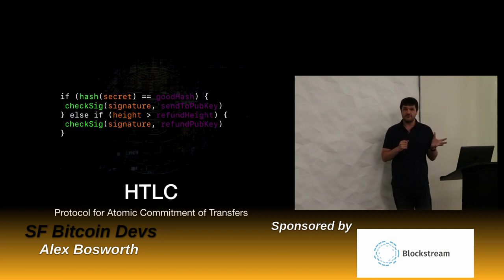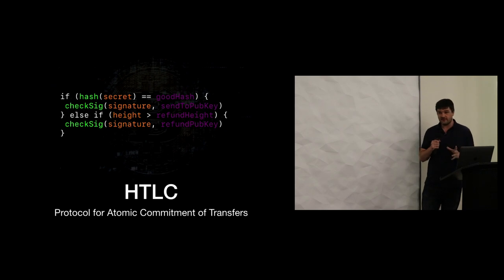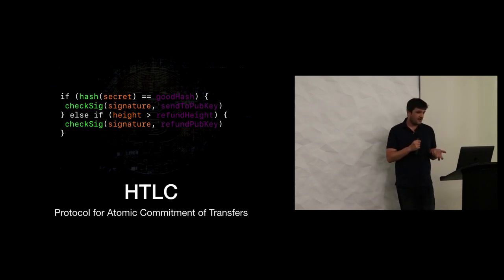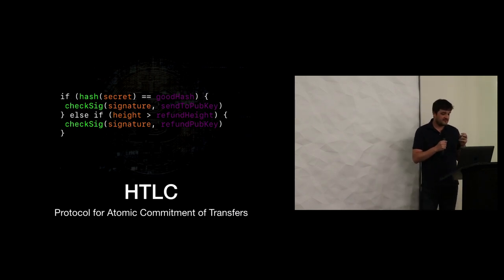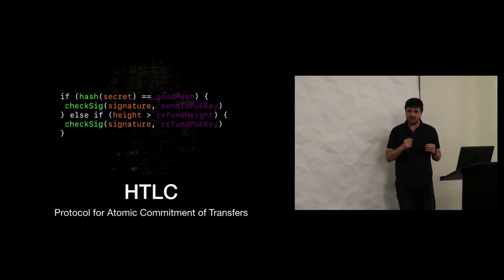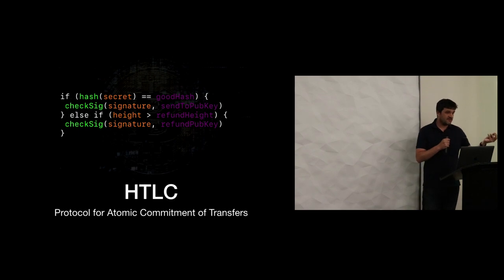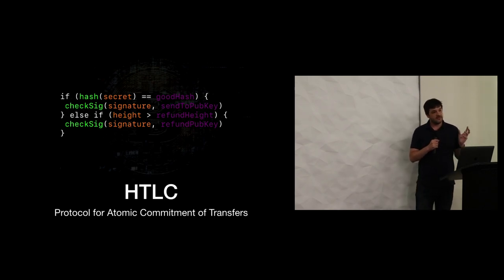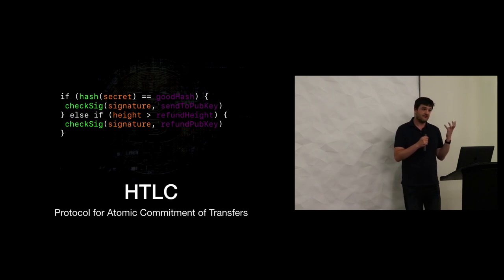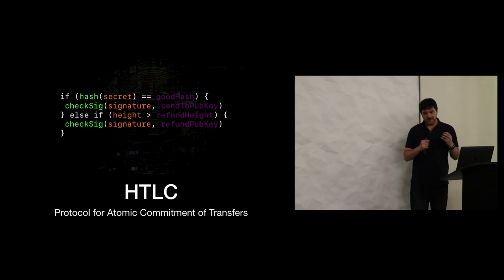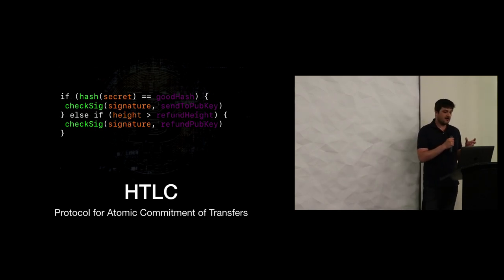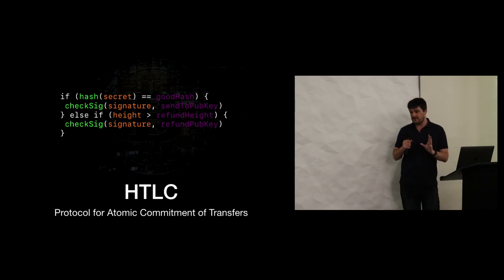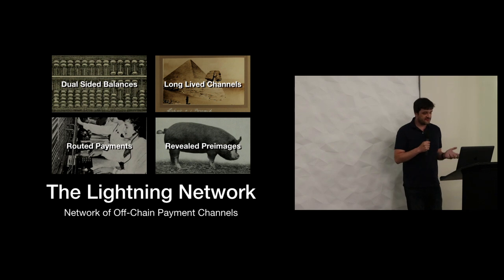To give some background on how Lightning and submarine swaps work, it's important to understand the HTLC. The basic concept is that instead of sending to a key pair like you normally do in Bitcoin, the HTLC adds extra conditions. It says I'm going to send to your key, but you also need to know this secret — this pre-image — to spend the money. The secret is committed to with a hash in the contract, and after a certain timeout period, the money goes to another key instead.